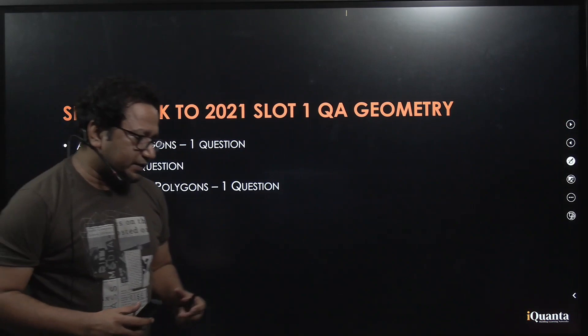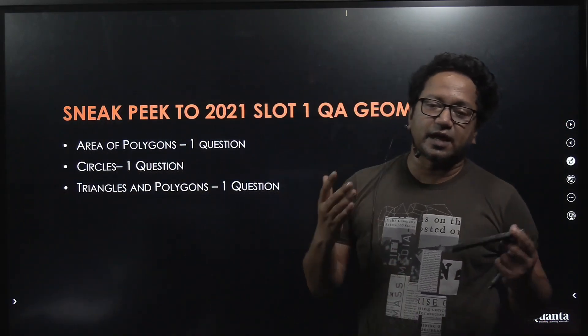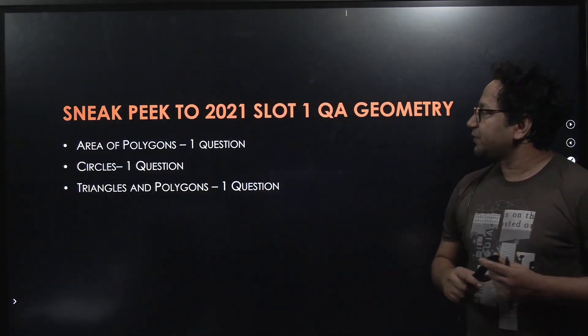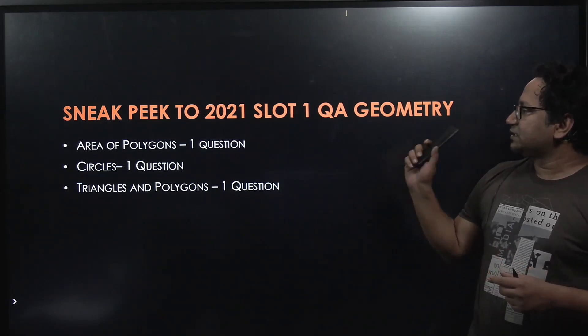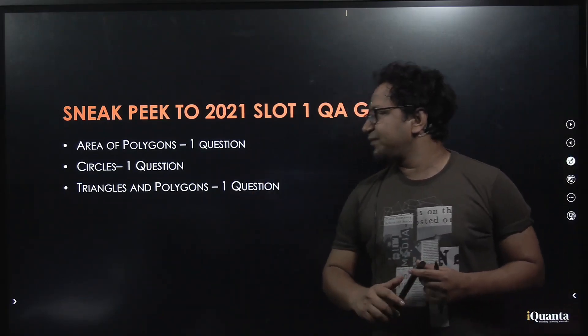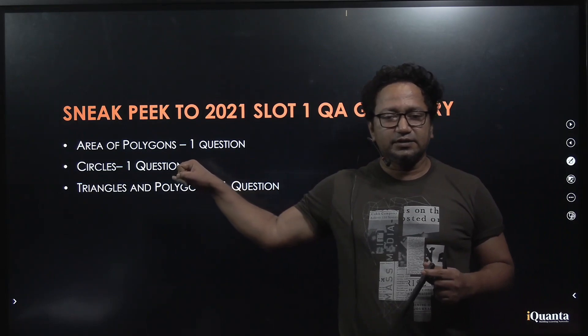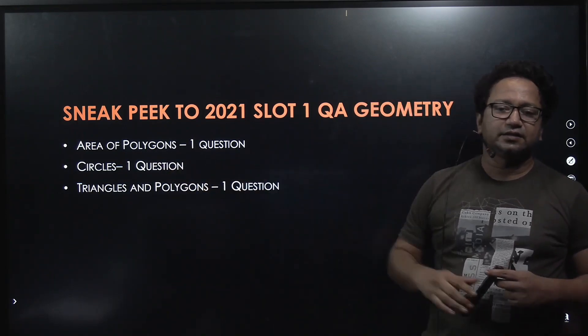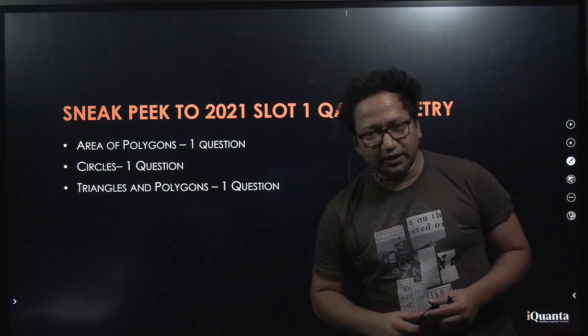Hello and welcome to iQuanta. Continuing with the tradition of IQA by iQuanta — developing mathematical acumen — today I'll be discussing all geometry questions from slot one of CAT 2021. Before that, let us explore how many questions were asked, the type of questions, and the concepts involved. There were three questions in total: the first was based on area of polygons, the second on circles, and the third on triangles and polygons combined.